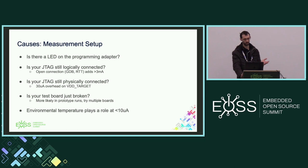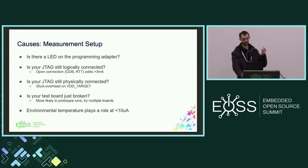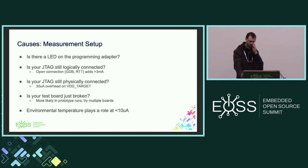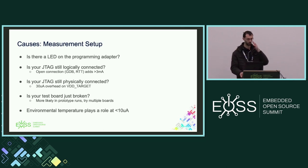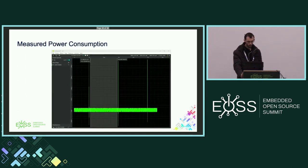Running GDB or RTT can easily add milliamps. For the Nordic LTE chipset, if you connect GDB and then disconnect, it doesn't go back to low power — you need to power cycle the device. Maybe your test board is just physically broken — try another one. And when getting down to really low power consumptions, environmental temperature actually does matter. If you measure 4 microamps one day, 4.5 the next, and 3.5 the day after, probably don't worry about it — it could be environmental or your measurement hardware is warmer.